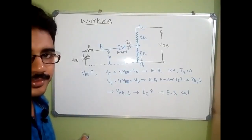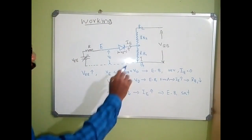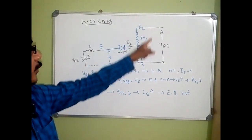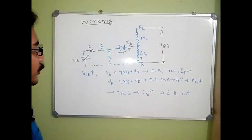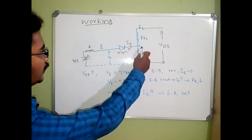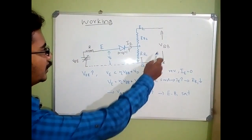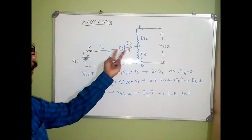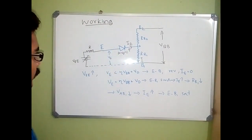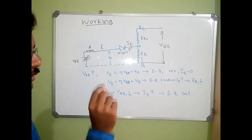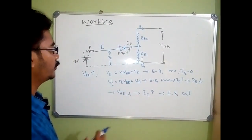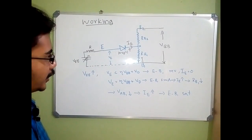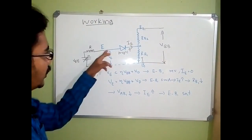Now we are going to discuss the working of UJT. We consider the equivalent circuit with voltage VEE applied at the emitter and VBB applied between B2 and B1. From the earlier discussion, VAB1 equals eta times VBB. Initially, VE is zero, so the emitter-base diode is reverse biased. For a UJT, there are two conditions: turn-on condition and turn-off condition. UJT is turned on when the emitter-base junction is forward biased, and turned off when it is reverse biased.